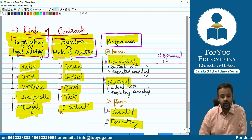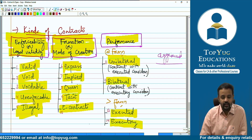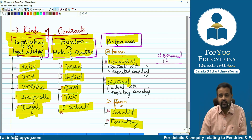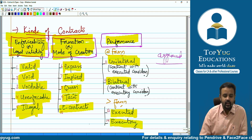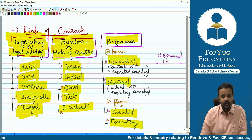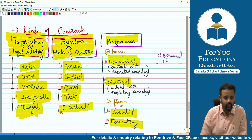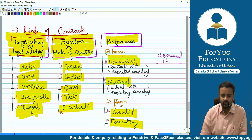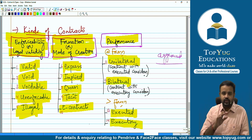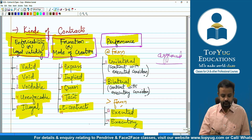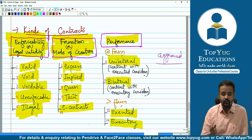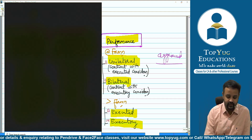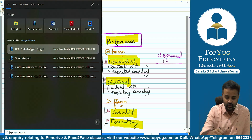On the basis of enforceability or legal validity, we said there can be a valid contract, void contract, voidable contract, unenforceable contract, or illegal contract. We have talked about all of these. Now let us take up a few questions rather than just revising, so I can give you a chance to answer.